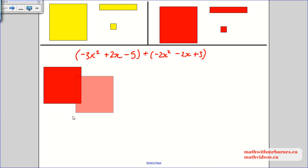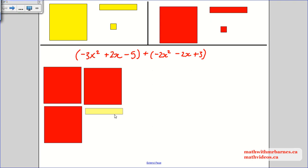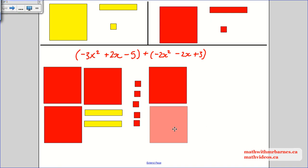Alright, so let's create this polynomial. So negative 3x: 1, 2, 3 plus 2x, positive 2x minus 5. So 1, 2, 3, 4, 5. And I got my next polynomial. So 1, 2, and then negative 2x. Oh, those are negative, sorry. 1, 2, negative 2x, 1, 2, and positive 3. 1, 2, 3.